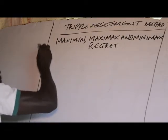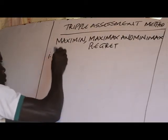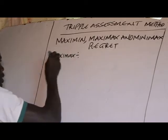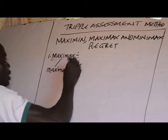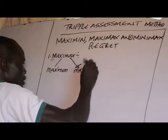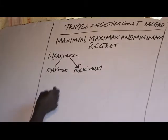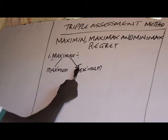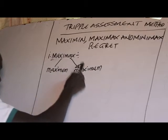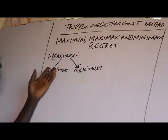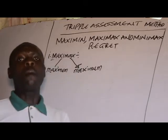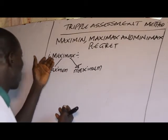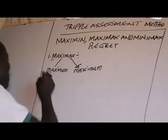What do we mean by Maximax? The first 'Maxi' refers to maximum, and the second 'Max' also refers to maximum. Therefore, the Maximax rule involves selecting the alternative that maximizes the maximum payoff achievable. That is called the Maximax rule.